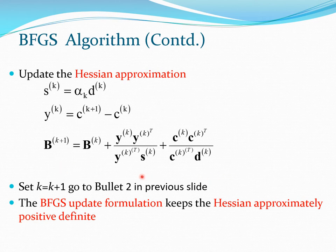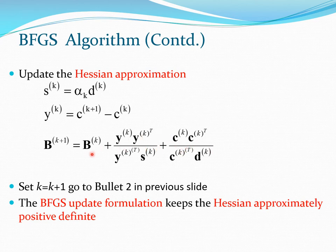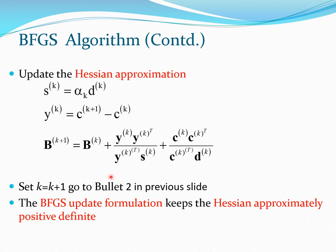In the BFGS update formula the denominator terms are scalars (dot products), while the numerator terms are matrices — an n×1 times a 1×n giving a matrix. You add the Bk matrix with these correction matrices, which represent the change in the design vector and the change in the gradient. This method uses past history to slowly build up the Hessian matrix; for quadratic functions Bk becomes exactly Hk after n steps. Then set k = k+1 and continue until convergence.